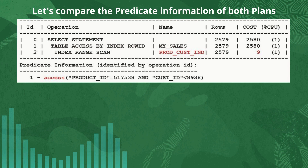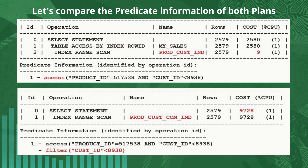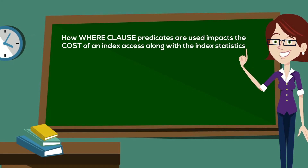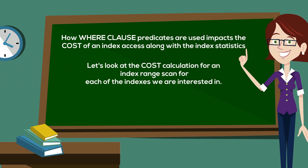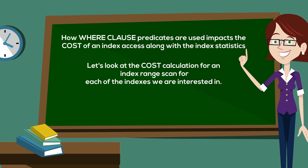Let's compare how the predicate information differs between the two plans. On the default plan, you'll notice both the product ID and the customer ID are being used as access predicates. However, in the plan that we were hoping to have, only the prod ID is being used as an access predicate and the customer ID is being used as a filter predicate. How where clause predicates are used impacts the cost of that index access along with the index statistics.